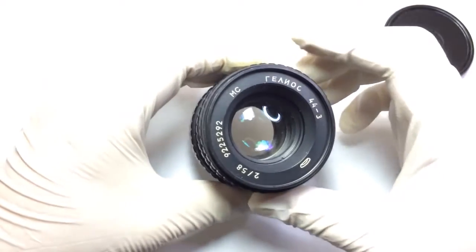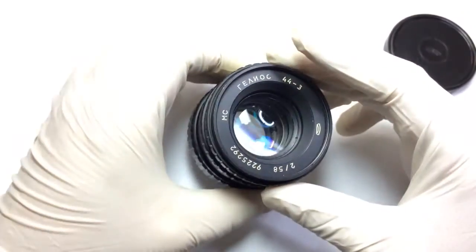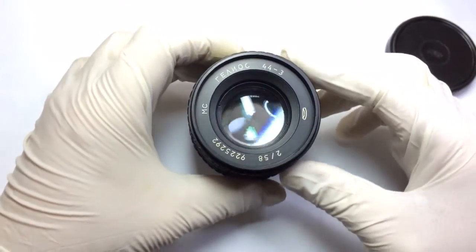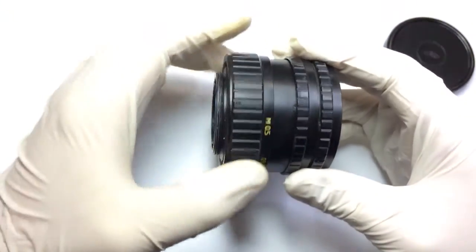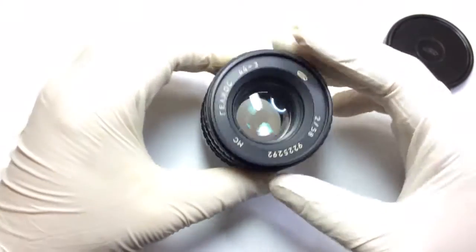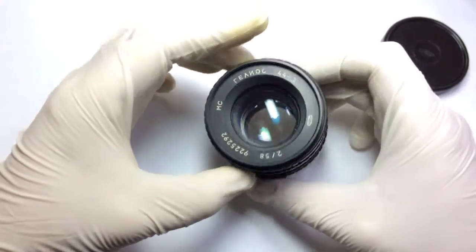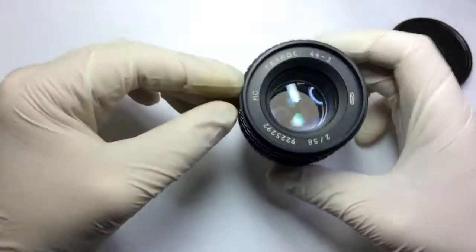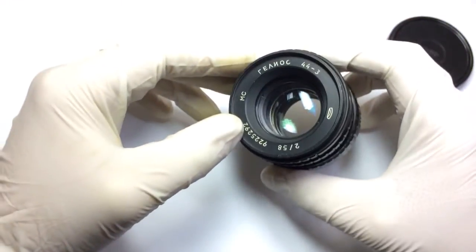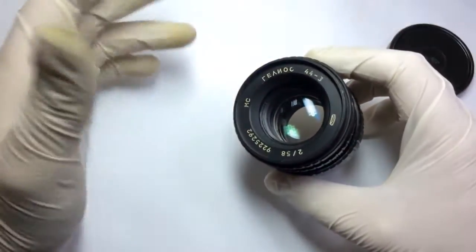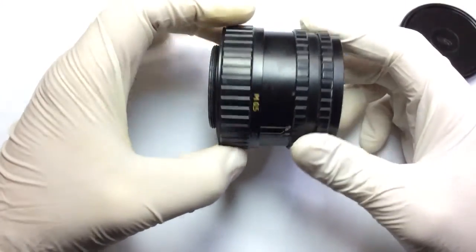In fact, this is a further development of the famous Helios 44.2 lens with some improvements, better handling of focusing and aperture control, and also this lens has multi-coated optics. These are more or less all the differences. The optical schema remains the same, so sometimes this lens suffers from old grease and I would like to show how to completely clean up and re-lubricate this lens.